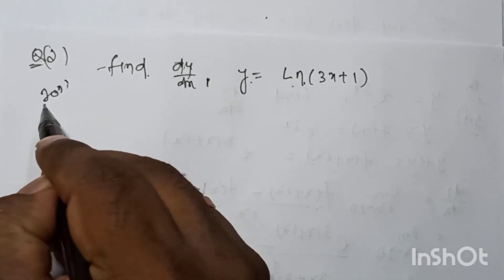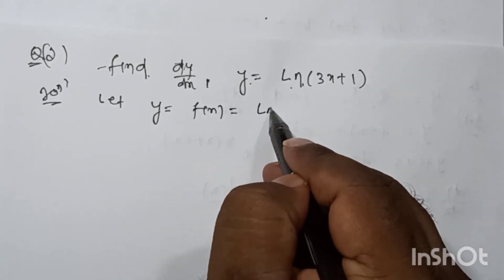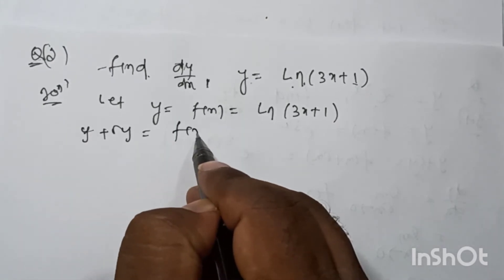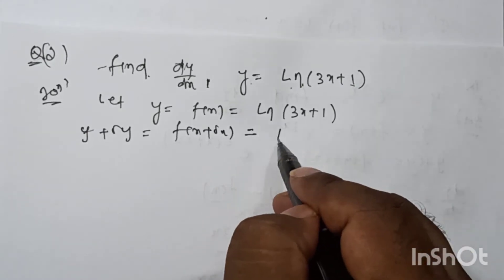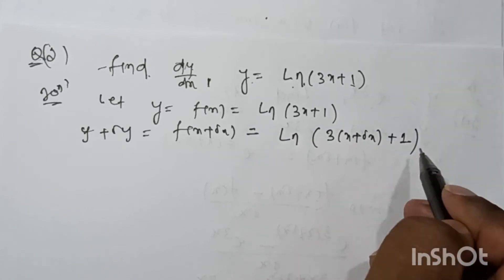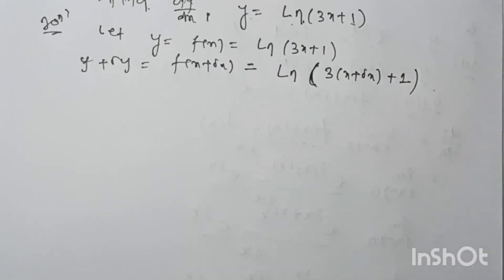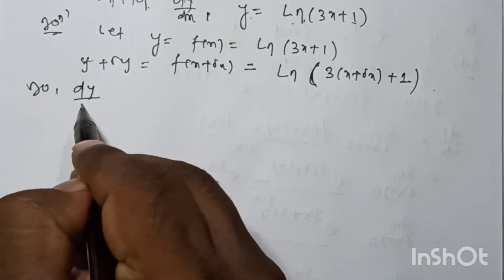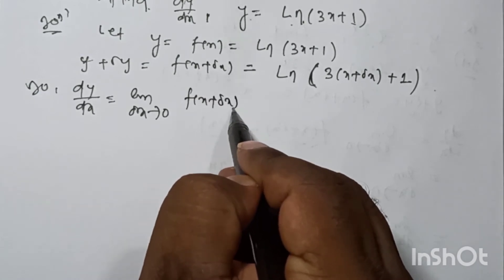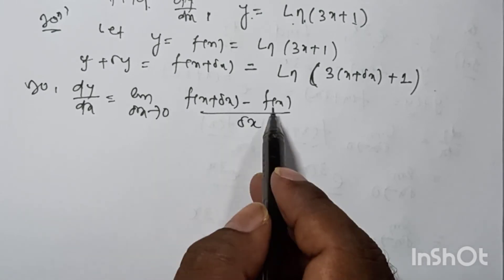Write down the solution. Let y = f(x) = ln(3x + 1). Given that y plus δy = f(x + δx) = ln(3(x + δx) + 1). By the first principle method: dy/dx = limit as δx tends to 0 of [f(x + δx) minus f(x)] divided by δx.